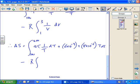Minus R times the integral between 1 and 3 of 1 over V dV. You could try and carry on from there.